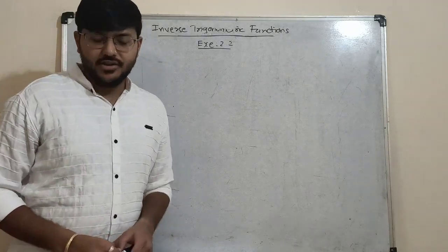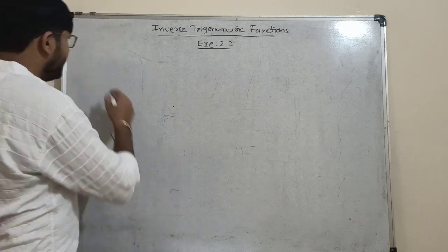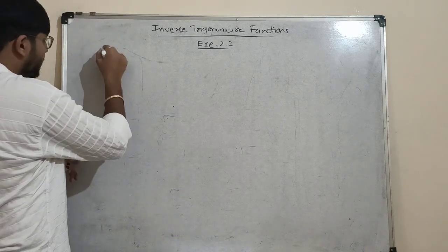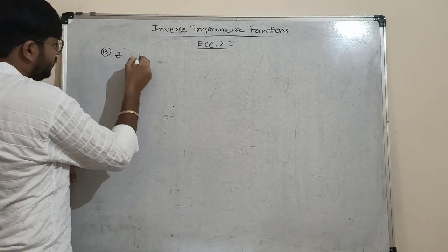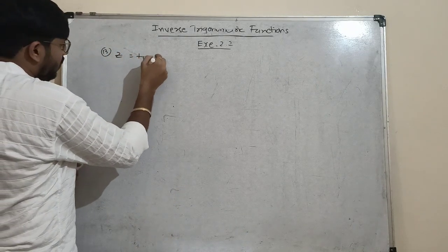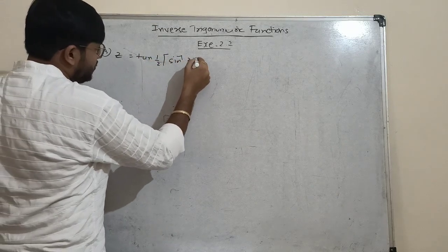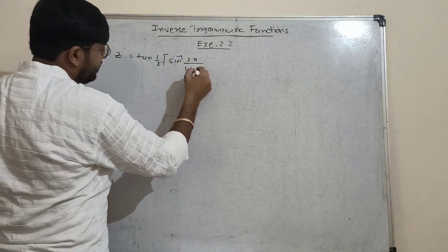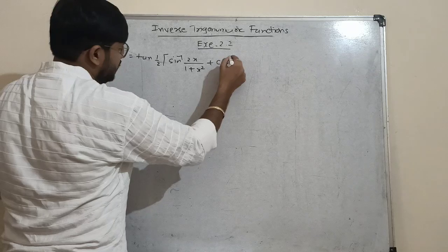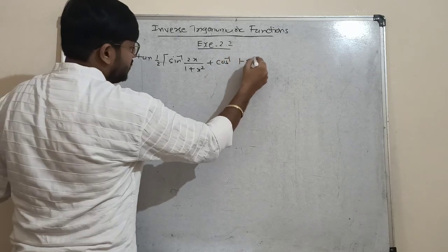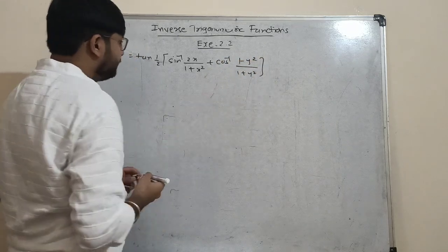Hello friends, let us continue with exercise number 2.2, number 13. We have tan of half times sin inverse of 2x/(1+x²) plus cos inverse of (1-y²)/(1+y²).